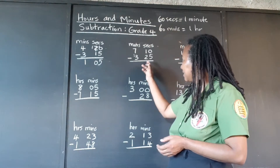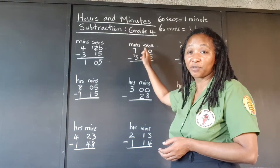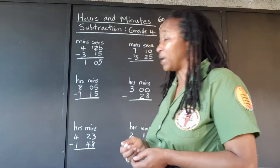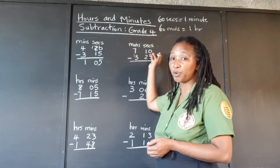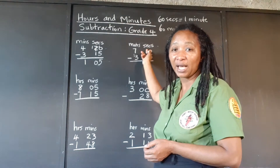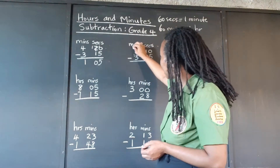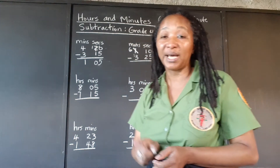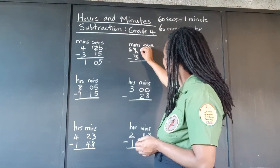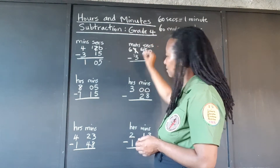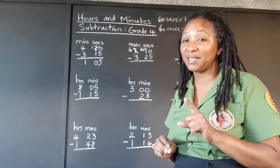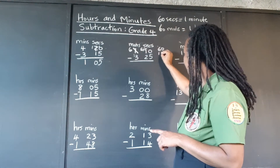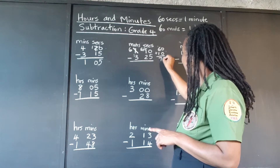But now we're asked to take 25 seconds from 10 seconds. If you remember what I just said, we need more seconds. We don't have enough at the top to take the 25. So we're going to take 1 minute from the 7 minutes. Just remember, that 1 minute we're carrying over as 60 seconds — that's the crucial point. We can go to the side and add the 60 and the 10, so in all now we have 70 seconds.